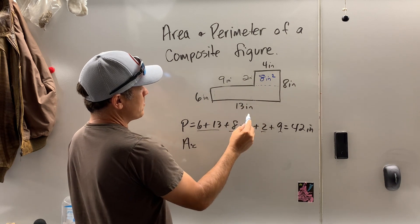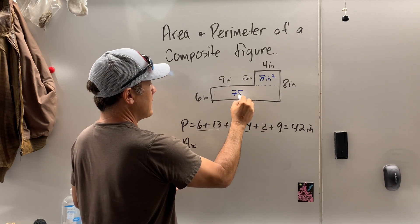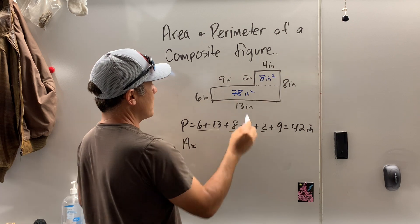What's this rectangle? Well, 6 times 13, which is what?